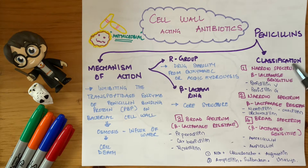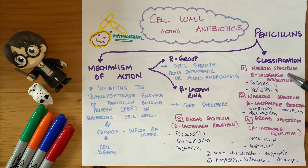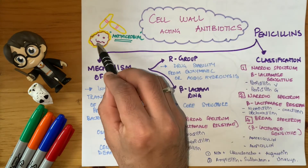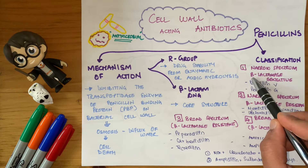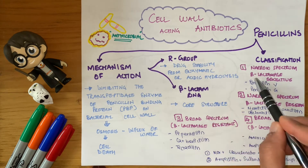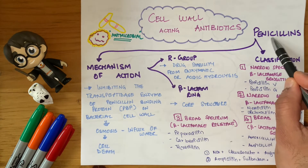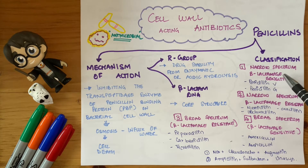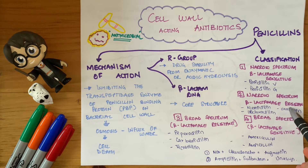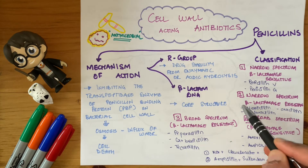For classification: penicillins are divided into narrow spectrum beta-lactamase sensitive. Beta-lactamase is an enzyme created by the bacteria to inactivate the drug — it damages the beta-lactam ring, making the drug inactive. Narrow spectrum beta-lactamase sensitive drugs cannot work against beta-lactamase; these are penicillin V and penicillin G. Next are narrow spectrum beta-lactamase resistant drugs, which resist the bacterial beta-lactamase enzyme keeping the penicillin active.